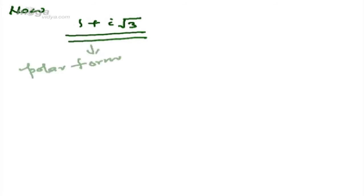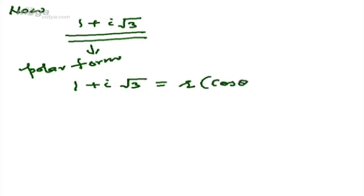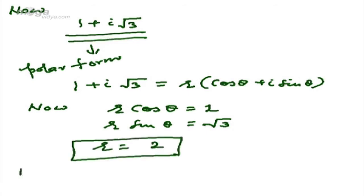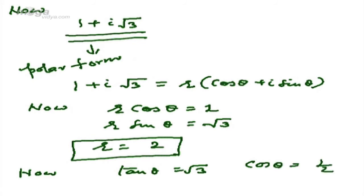Now let us look at a simple example: 1 plus i root 3. We have to write this complex number in polar form, that is, 1 plus i root 3 equals r cos theta plus i sine theta. So r cos theta equals 1 and r sine theta equals root 3. By squaring and adding these two terms, we get r equal to 2. Now tan theta equals root 3, cos theta equals 1 by 2, and sine theta equals root 3 by 2.